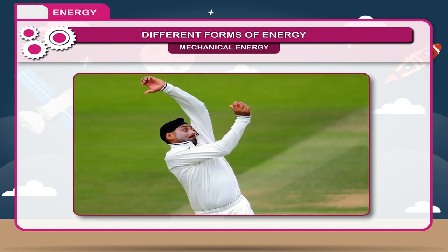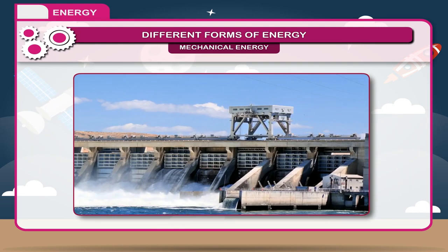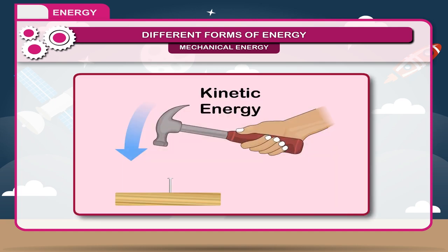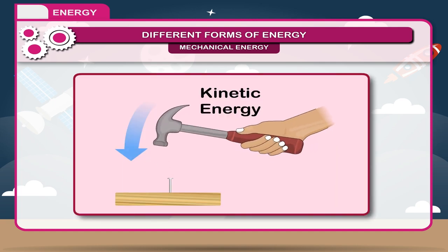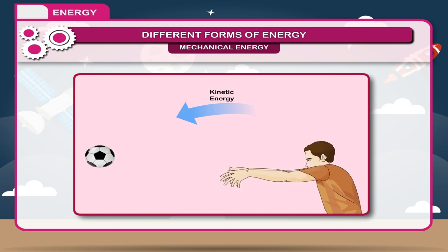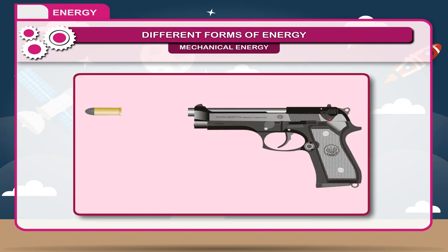A moving cricket ball can push back the stumps, moving water can generate electricity, and a moving hammer can drive a nail into wood. Thus, a moving body is capable of doing work and hence possesses energy. The energy of a body due to its motion is called kinetic energy.